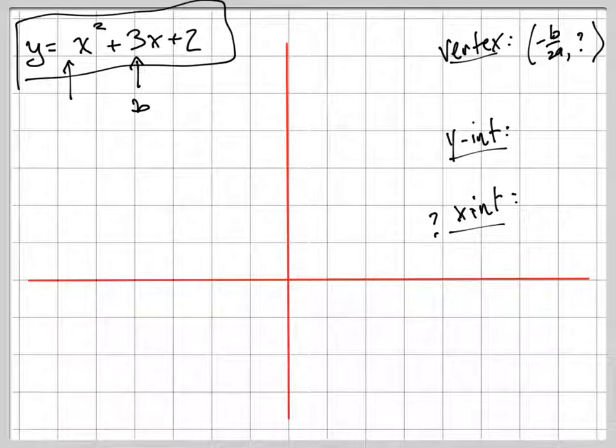Here's your a, which is 1, right? So negative b over 2a is just negative 3 over 2 times 1. So it's negative 3 halves. Got it? That's your x-coordinate.